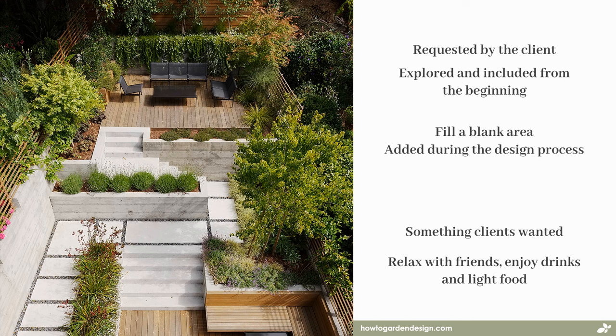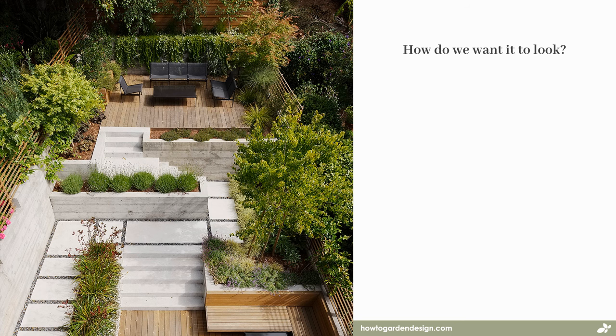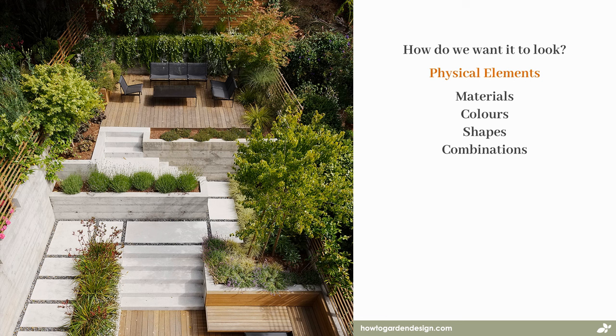Let's take a look at the first principle — developing criteria — and how to develop some for this particular space or activity. How do we want it to look? This first point is mainly about the physical elements: the materials, the colours, the shapes, combinations of these things, and the contrast between them. You can find examples of these everywhere — images online, apps, videos, magazines and books, and even in the real world.